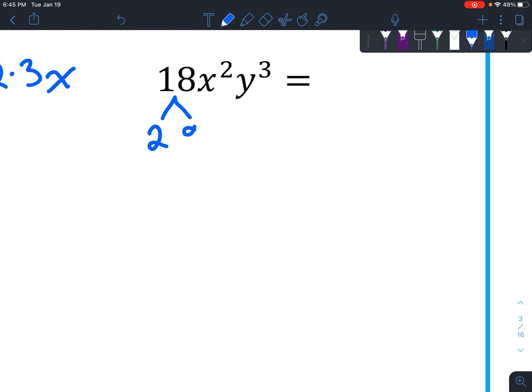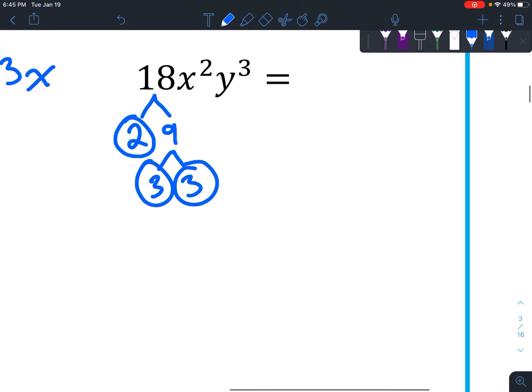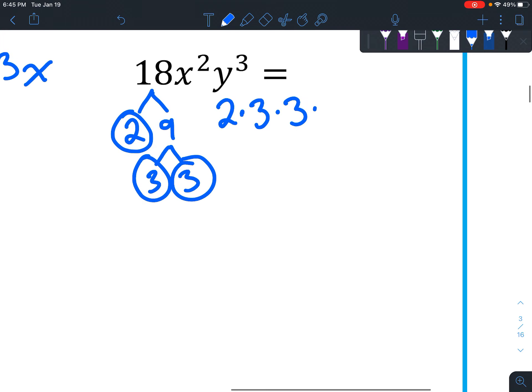18 is 2 times 9, which is 3 times 3. I might write it down here. As a general rule, it's best to put them in smallest to largest order. So 2 times 3 times 3, x, x, y, y, y.